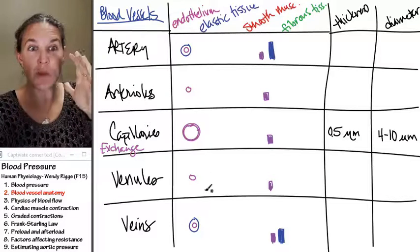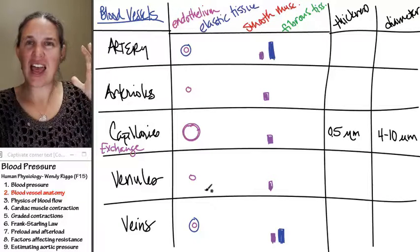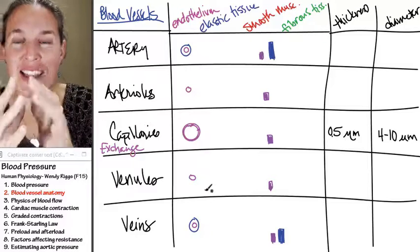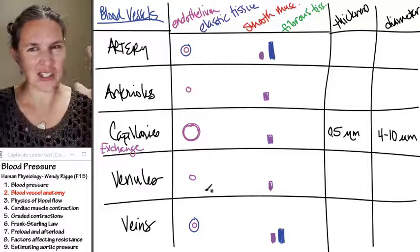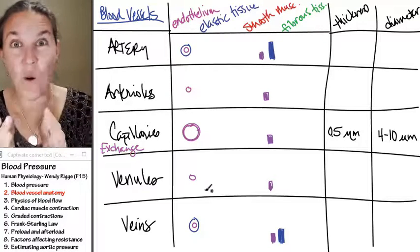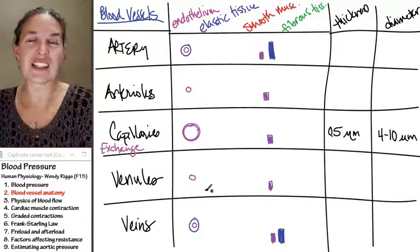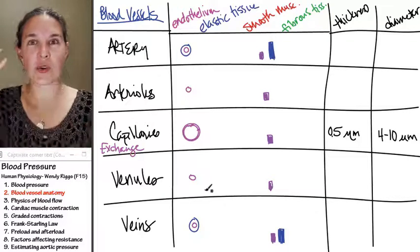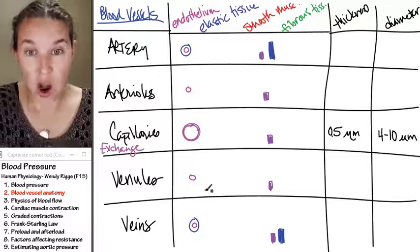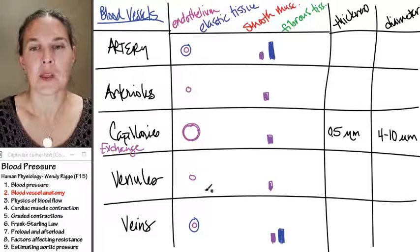They're able to absorb that pressure and stretch and then contract. Even though they're not really contracting, they're just elastically recoiling and that provides an additional push to push that blood onward through the body.